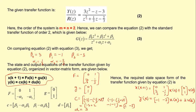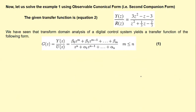This model was obtained by comparing the given second order transfer function with the standard second order transfer function, obtaining the required values of alphas and betas, and then substituting these values into the matrices F, G, C, and D. Now we will see how to obtain the state space model of the same transfer function using the observable canonical form, that is the second companion form.